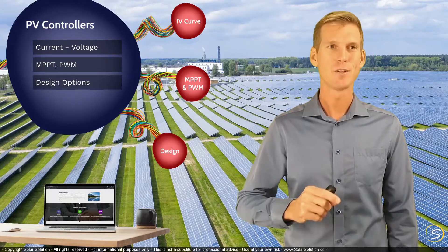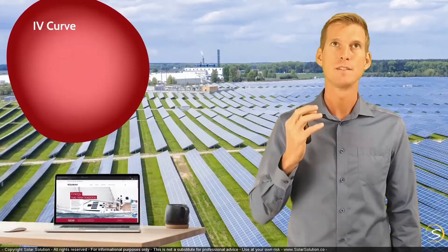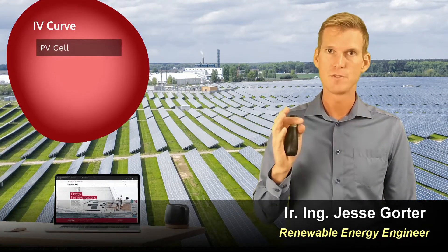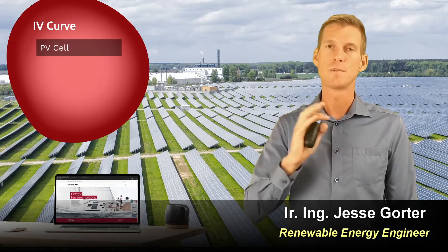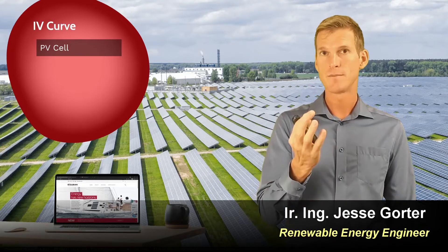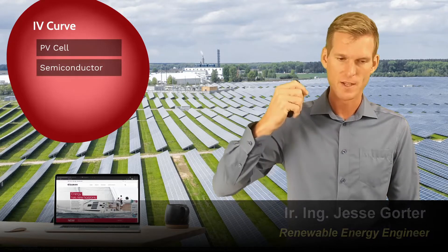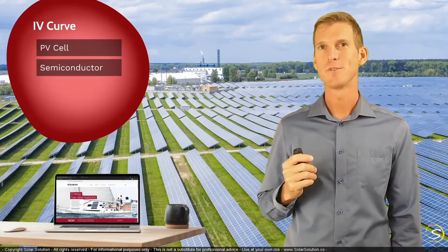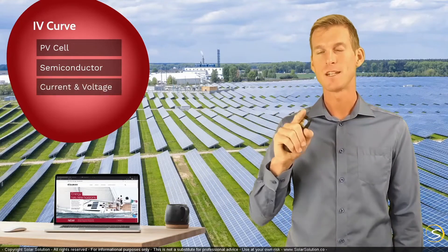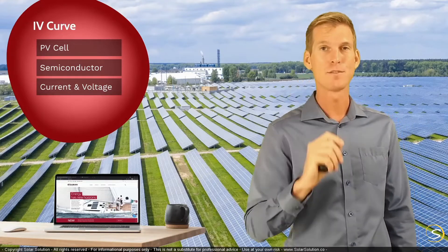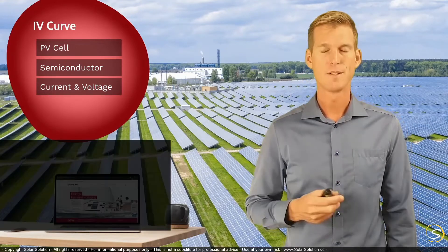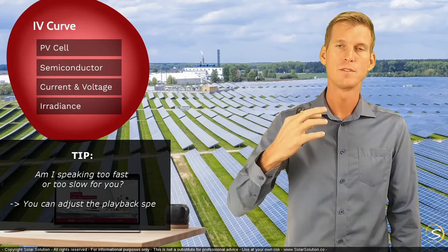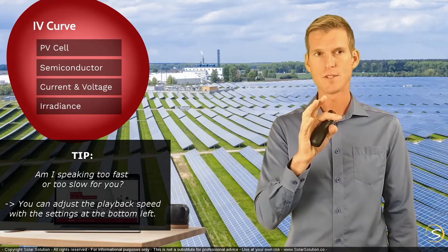Let's start by looking at the IV curve. The IV curve is a very essential characteristic of a specific photovoltaic cell because all the different cells used in the market have their own specific IV curves. A photovoltaic cell is a semiconductor, and when you illuminate it with sunlight, it produces both a current and a voltage, resulting in a certain amount of electrical power. The irradiance — the strength of the sun at a particular time — is the prime factor in determining what kind of IV curve you'll get from your cell.